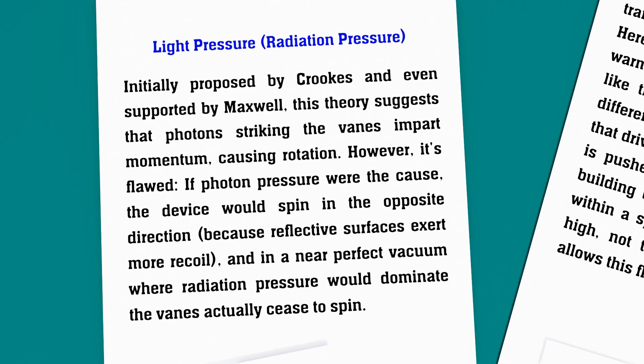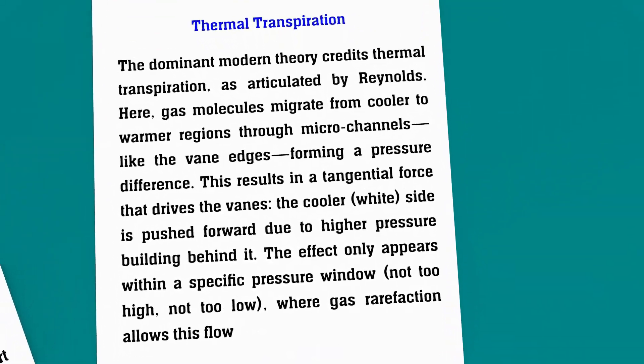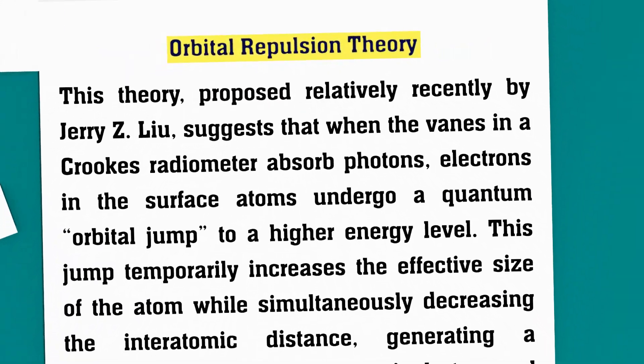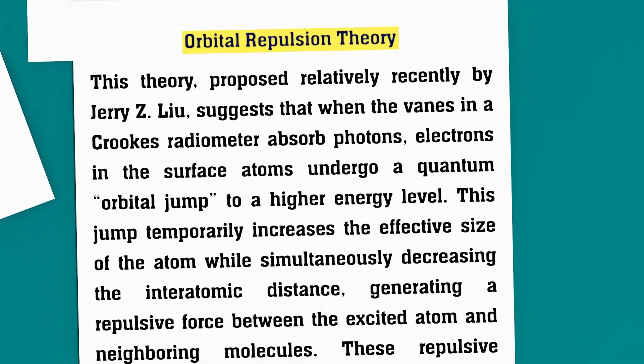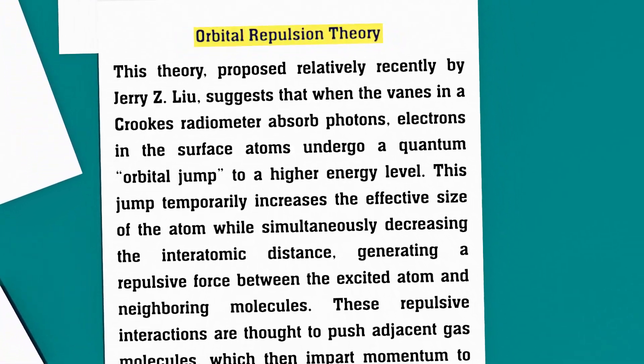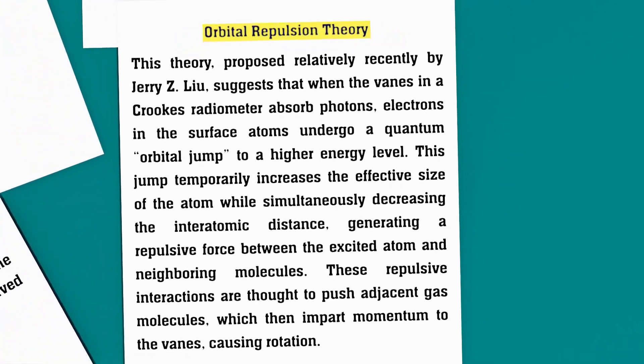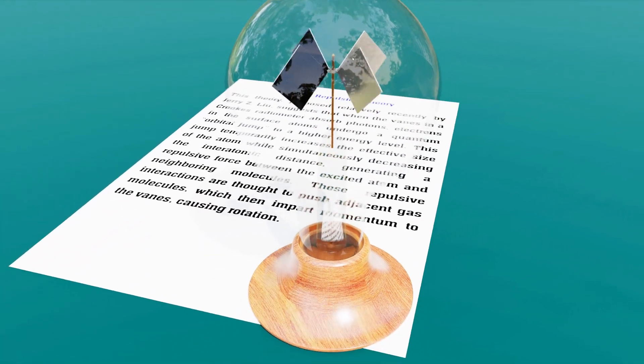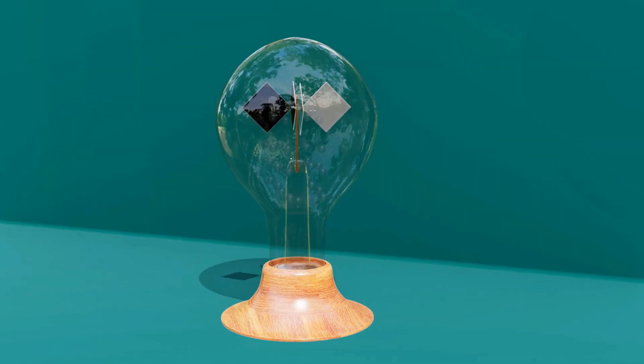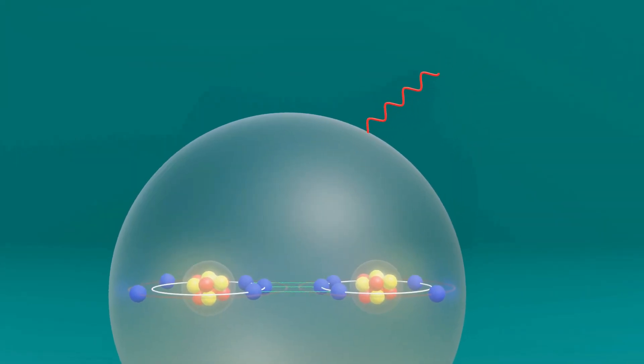While several theories have been proposed to explain how it works, the most compelling one I've come across is the orbital repulsion theory. This is a relatively new theory and it offers a fascinating perspective on what might be happening inside the radiometer. According to this theory, when a photon, a tiny packet of light, strikes a molecule of air inside the bulb, the molecule absorbs its energy.